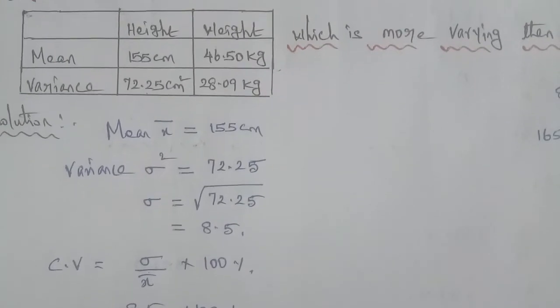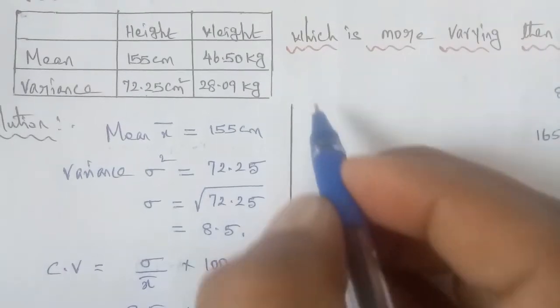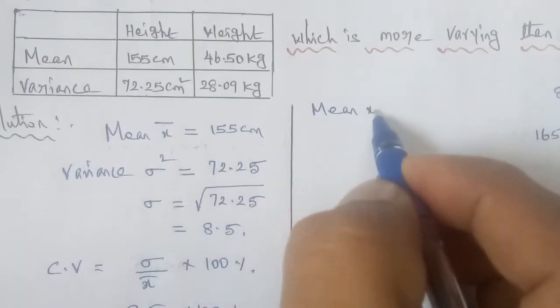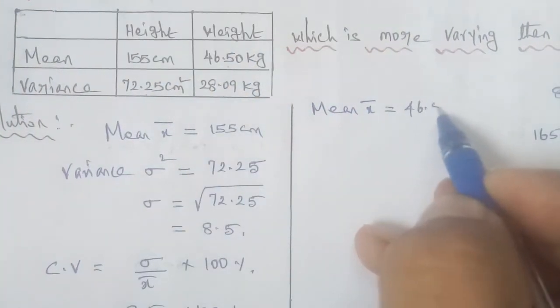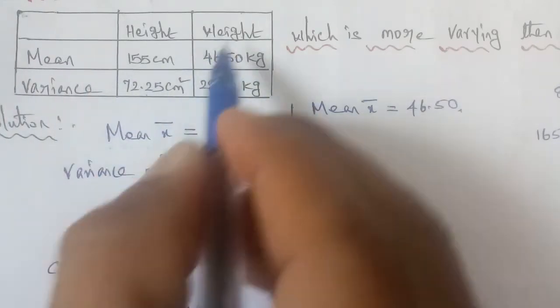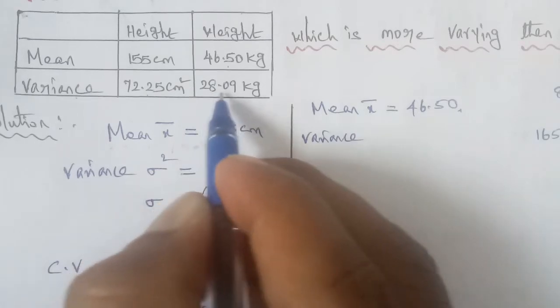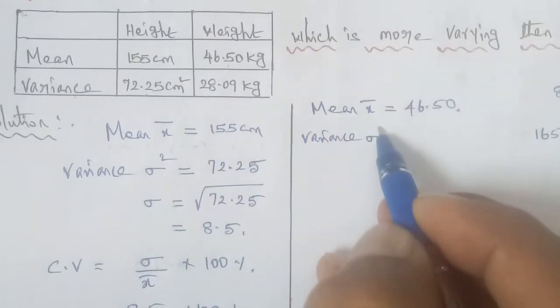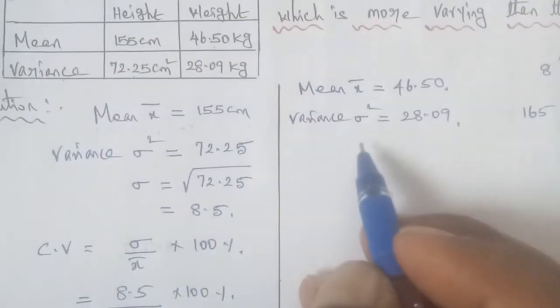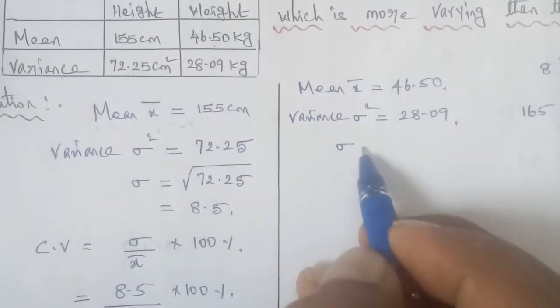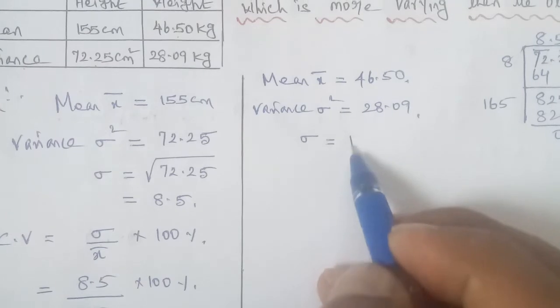Now, we will have the weight value. Mean x bar is equal to, the weight value mean is 46.50. The weight value variance is 28.09. Variance symbol is sigma squared is equal to 28.09. We will apply the CV formula. We will apply the square root.